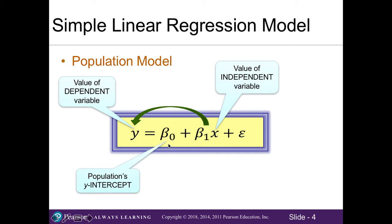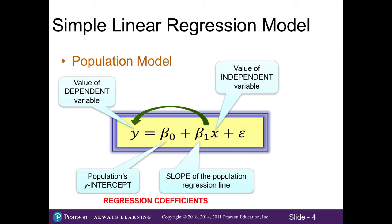Our β₀ is our population's y-intercept. This is the constant in our model. β₁ is the slope of the population regression line. The slope tells us the direction of our relationship, if any exists, whether it's positive or negative. Together, these two are the regression coefficients that will be used to explain the model. Epsilon is the random error term which we're trying to minimize.